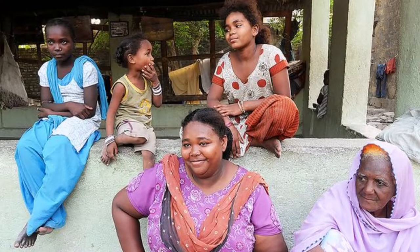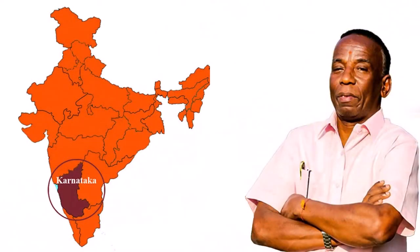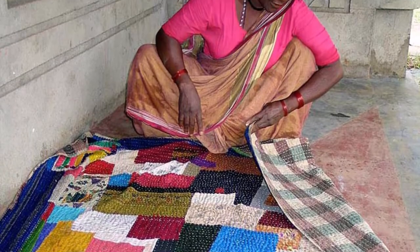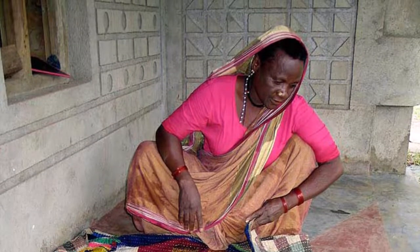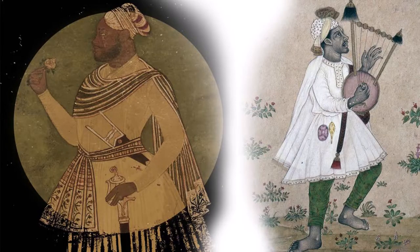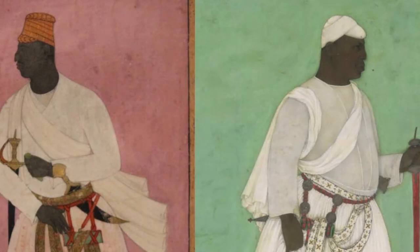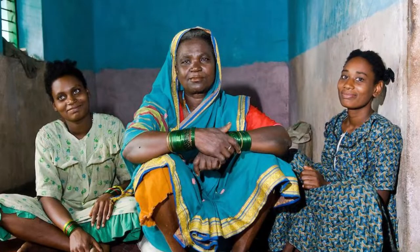In fact, the largest democracy in the world got in 2020 its first politician of African descent. He is called Shantaram Siddi and took charge as a member of the Karnataka Legislative Council. Mr. Siddi belongs to the Siddi community, whose members are descendants of East Africans brought to India from the 17th century to serve as warriors, courtiers or slaves.